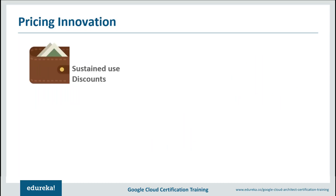Next we have sustained use discounts. GCP has something called Google Cloud Compute Engine, and it automatically lowers the price of your virtual machines when you use them to run sustained workloads. The more instances you use and for longer durations, the less you pay. GCP provides a discount of around 25% when you go for sustained use discounts.